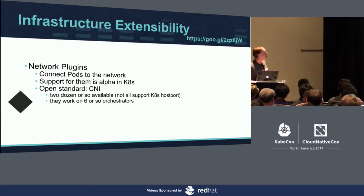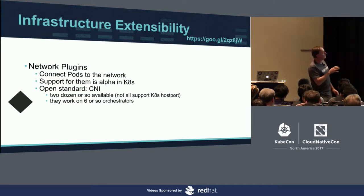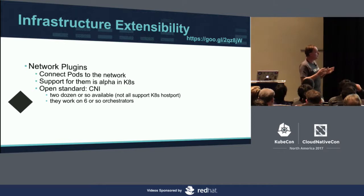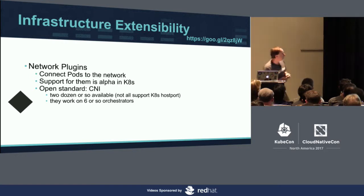For network plugins, there's an open standard called CNI, and there are a couple dozen of these plugins. They started with Docker, but we had to tweak it a little to get it to work with Kubernetes because of host port. There are a couple that support Kubernetes fully, and I expect to see more over time. This is a little bit trickier — I think it uses gRPC instead of being a binary plugin.